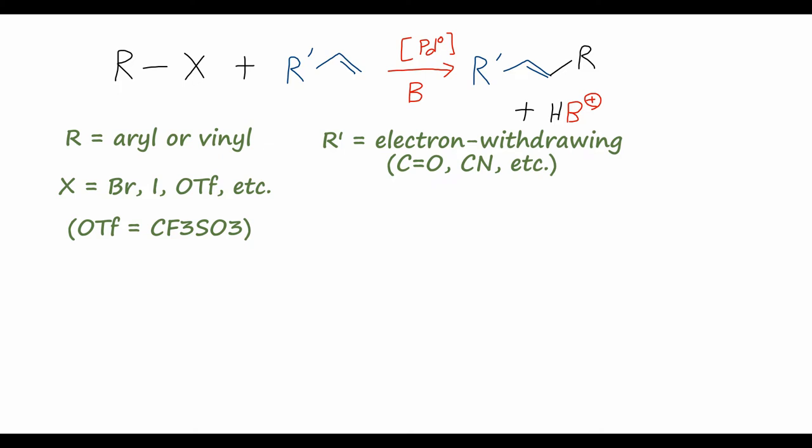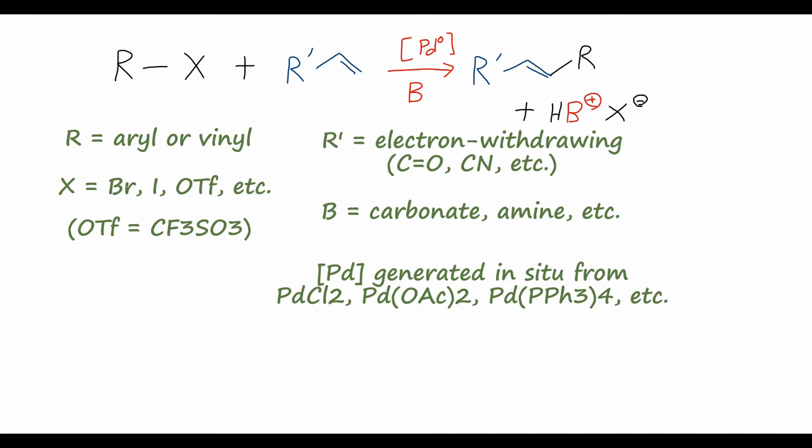And there are a lot of options for the base to use. You can use some sort of carbonate, like sodium or potassium carbonate, and oftentimes you can use organic bases, like amines. Finally, this palladium zero catalyst, which is going to be kind of the star of our show, will be generated from a variety of palladium precatalysts. So a lot of times you'll see palladium chloride, palladium acetate, or this tetrakis triphenylphosphine palladium zero catalyst.